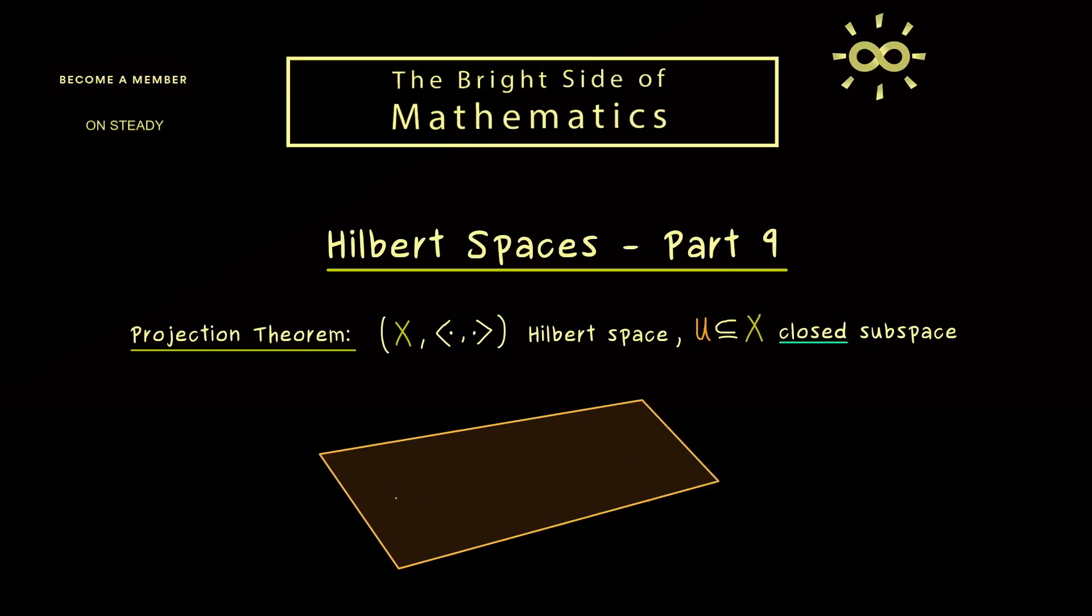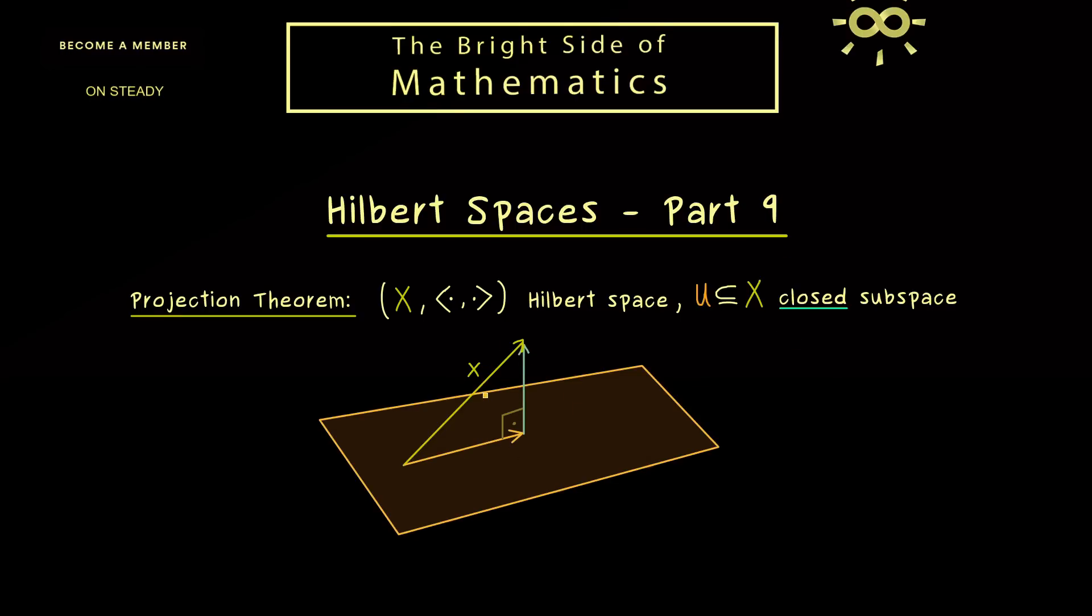And now the claim of the projection theorem is that every vector in X can be decomposed into two parts. There, one part is a vector inside the subspace U, and the other part is exactly orthogonal to the whole subspace U. Hence, the important thing here is that we have a right angle between both components.